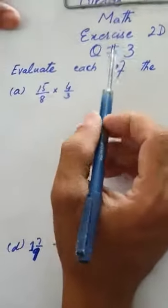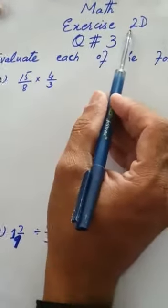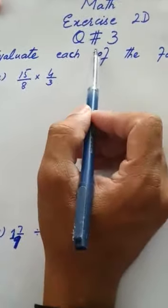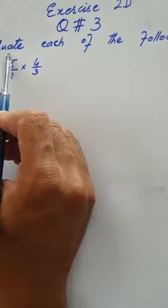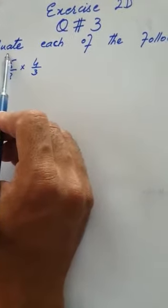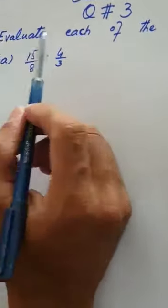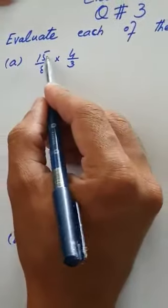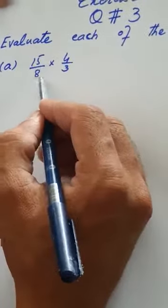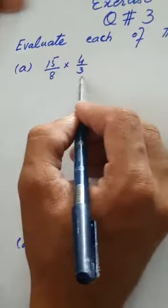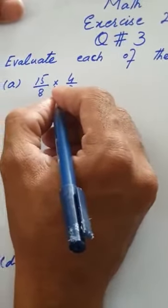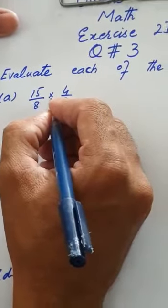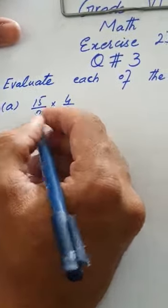This is exercise question number three. According to the statement, evaluate each of the following. In the first part of question number three, we are given 15 over 8 divided by 4 over 3. As you can see there is a symbol of division, which means we can convert it.